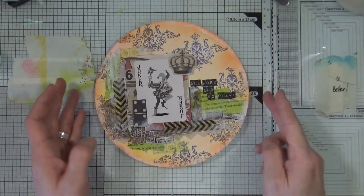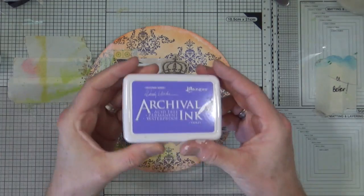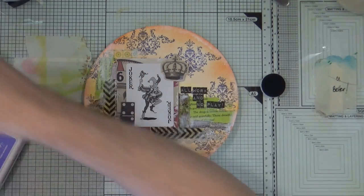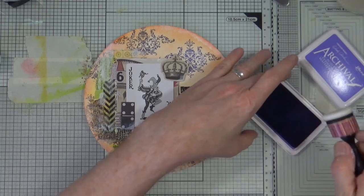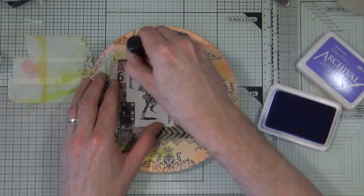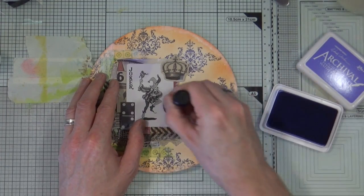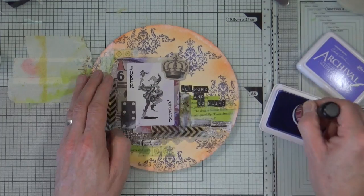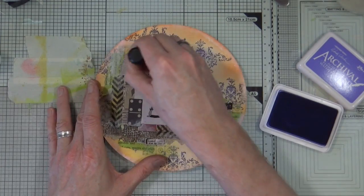So before I move on to the final step, I wanted just to add a little bit more of that purple colour from the background into the foreground. So I've brought back out the violet ink and I'm just going to add a little bit onto my joker card, just to bring that colour into the foreground a little more.